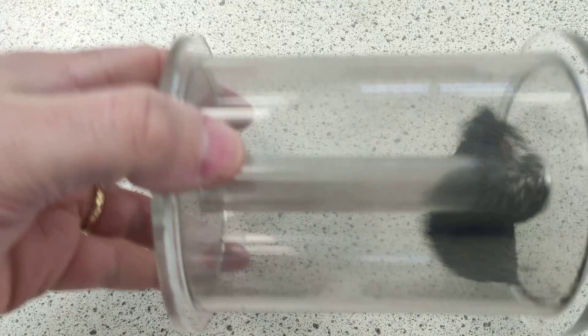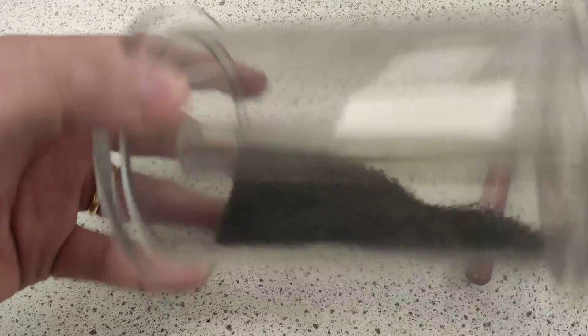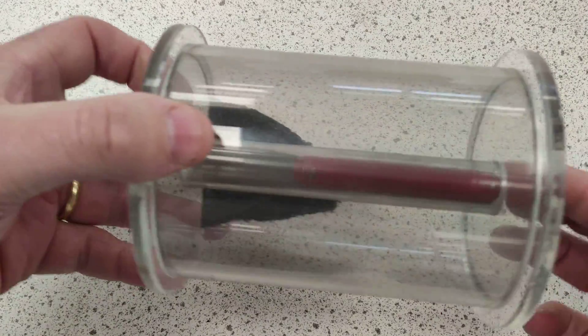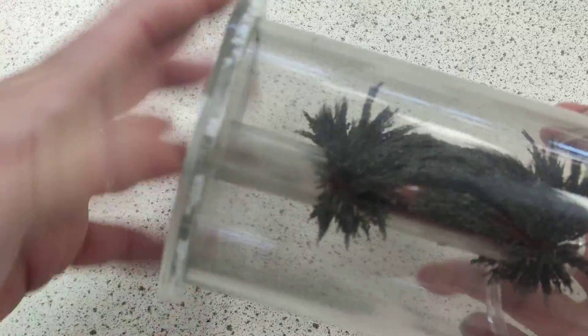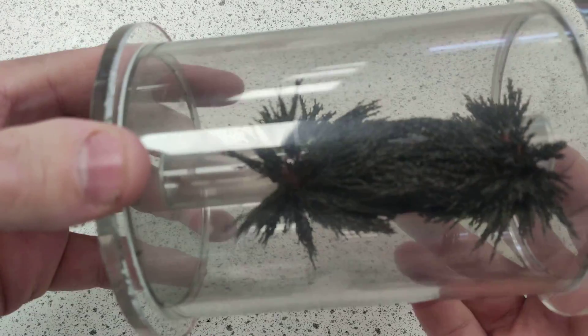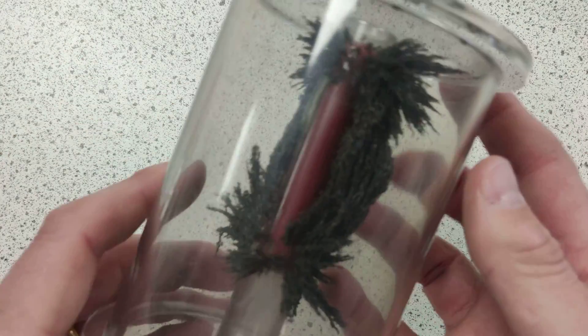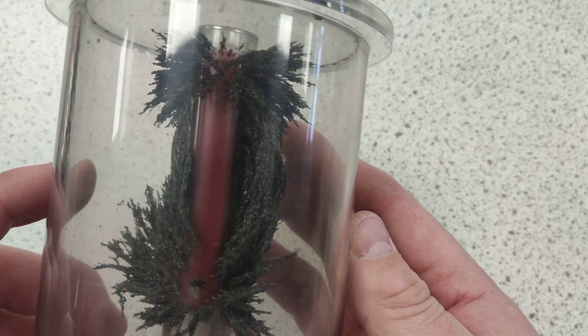Three dimensions, iron filings. Put the little torpedo in and give it a shake, give it a rotate, and look, we can see in three dimensions the field lines, can't we?